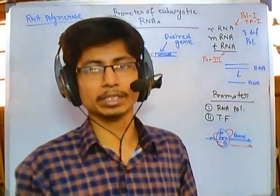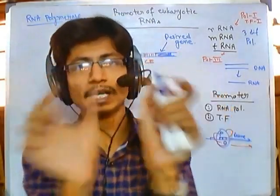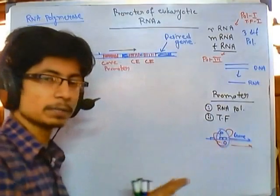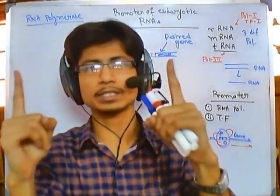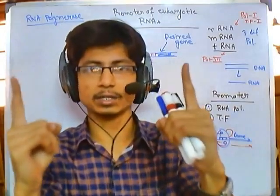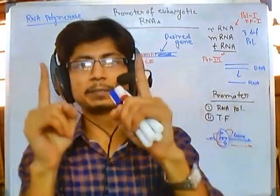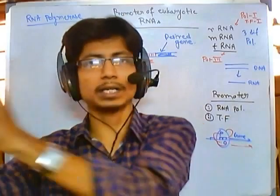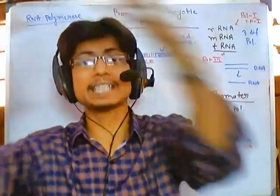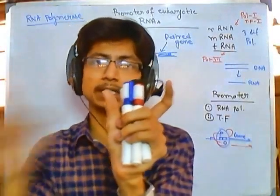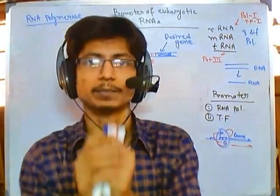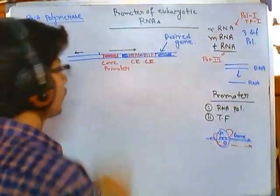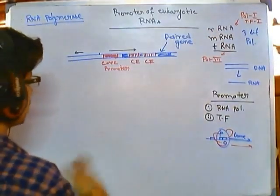The promoter of rRNA consists of two different segments, and the promoter is not placed in a single stretch — it is placed in multiple stretches. In prokaryotes, the promoter sequence is always present in a single stretch of 50-60 nucleotides. But in the eukaryotic system, the promoter sequence is present in segments.